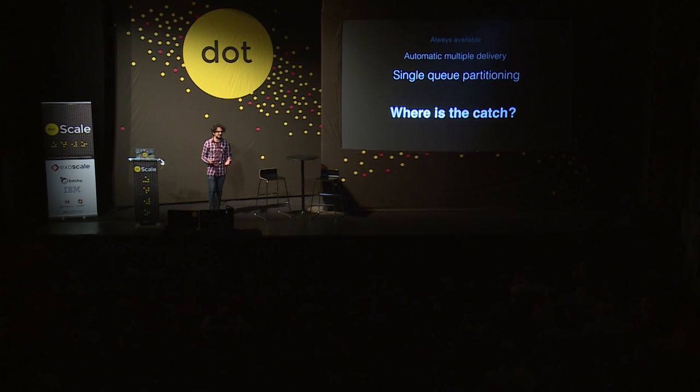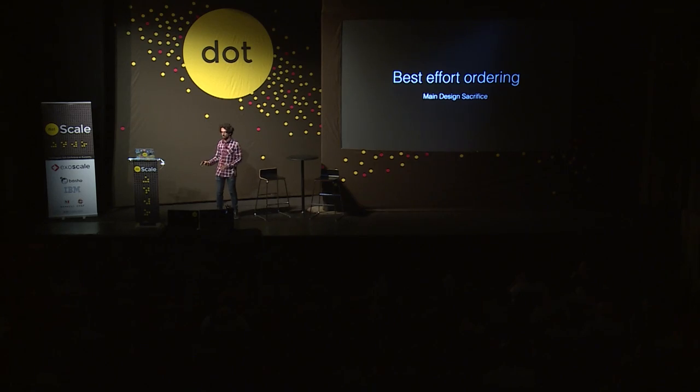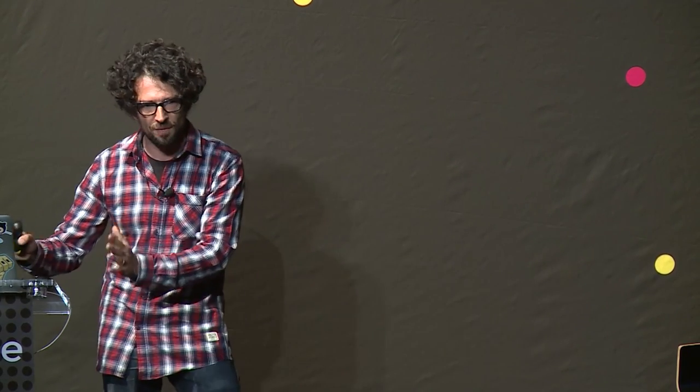Federation also means a single big queue is split among nodes, so you don't have a single queue that must live on a single master. The catch — because this looks almost too good to be true — is that in order to get these features I made a very big design sacrifice: just best-effort ordering. Usually message queues have this taboo of total or causal ordering — if a message was produced first, it should go out first. But there are tons of use cases where this is not needed, and when you do need ordering, you likely have a CP store and can use an unordered queue on top of it.